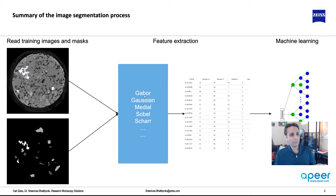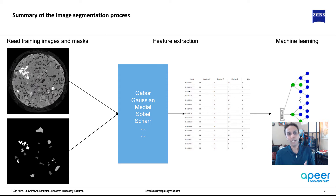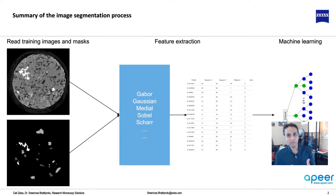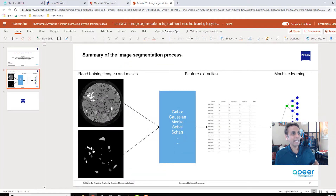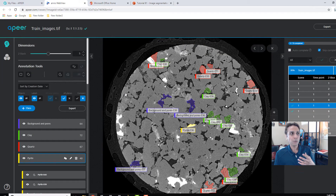For each image we are going to extract Gabor, Gaussian, Median, Sobel, and all of these features, then attach them into a dataframe and train a random forest for future prediction. That's the plan, and again please go to www.apeer.com to label your images.